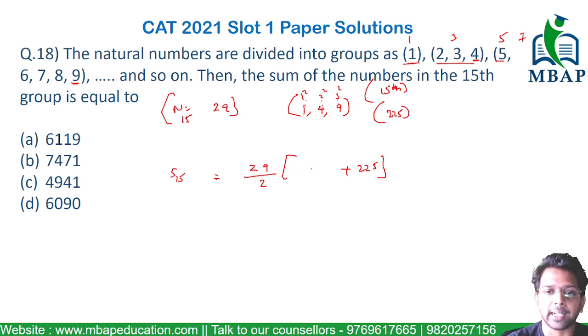I repeat, there are 29 terms, so the first term will become 197. Hence the final answer for this question will be 29 upon 2 times (197 plus 225). If you solve this, you will get the final answer 6119 to be the final answer for this question.